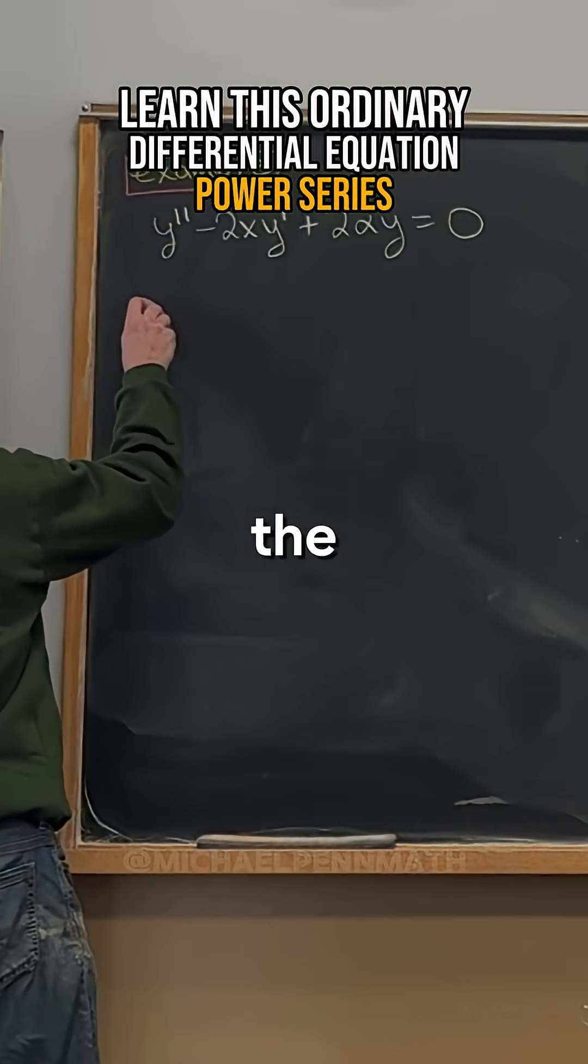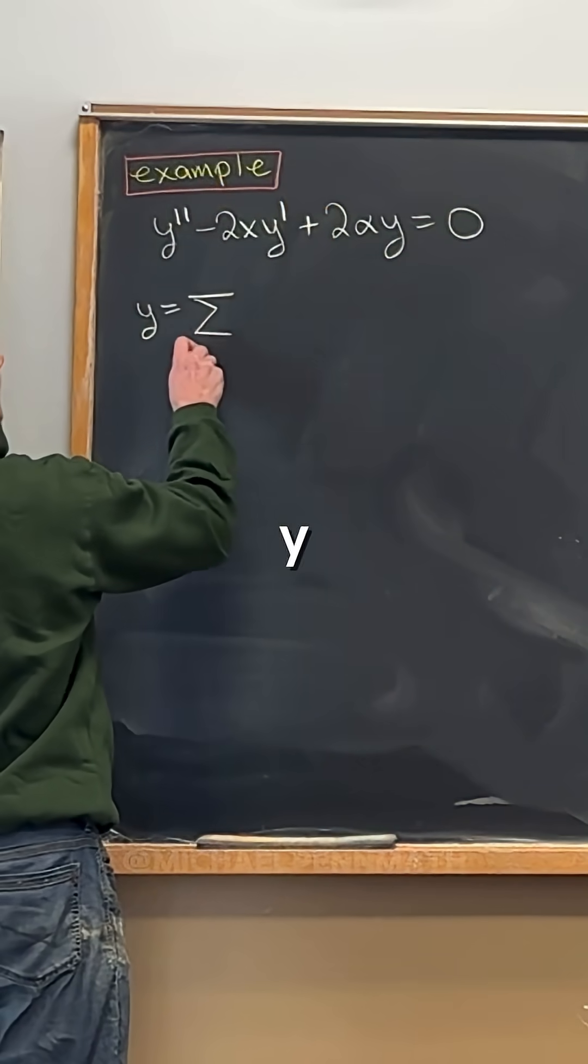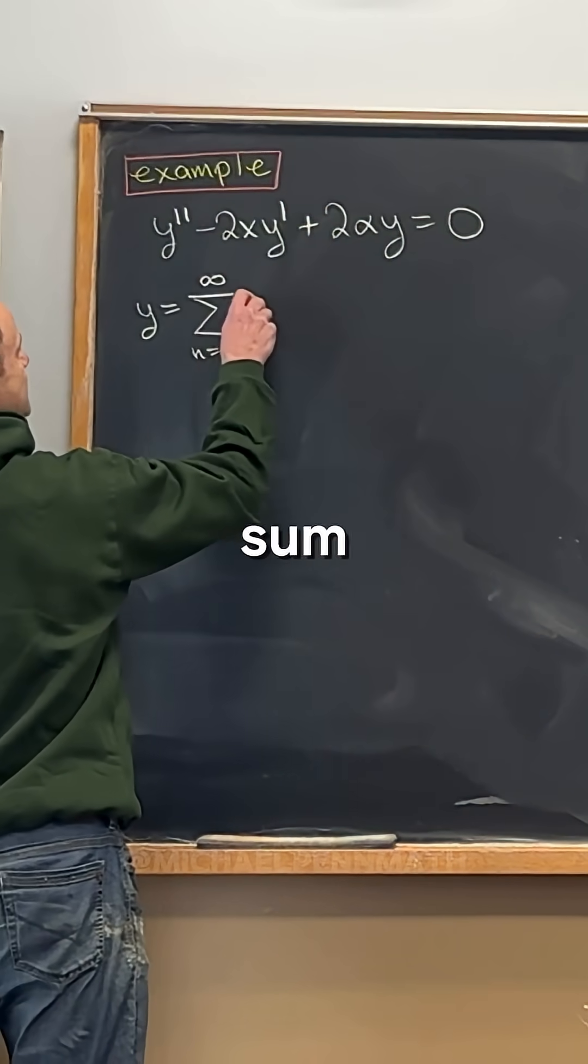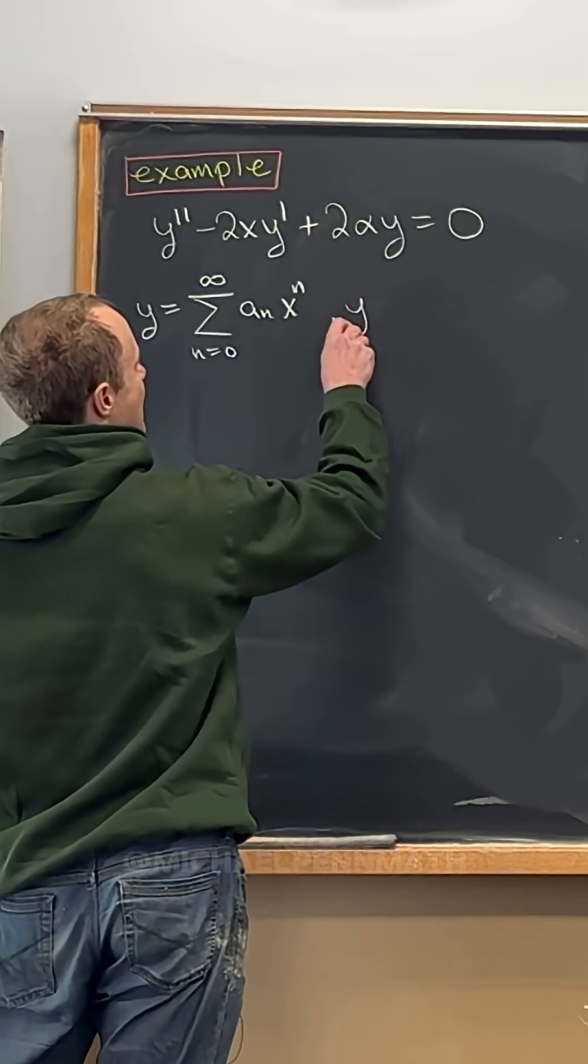Okay, so anyway, let's do the normal thing. So we'll set y equal to the sum as n goes to infinity of a sub n x to the n.